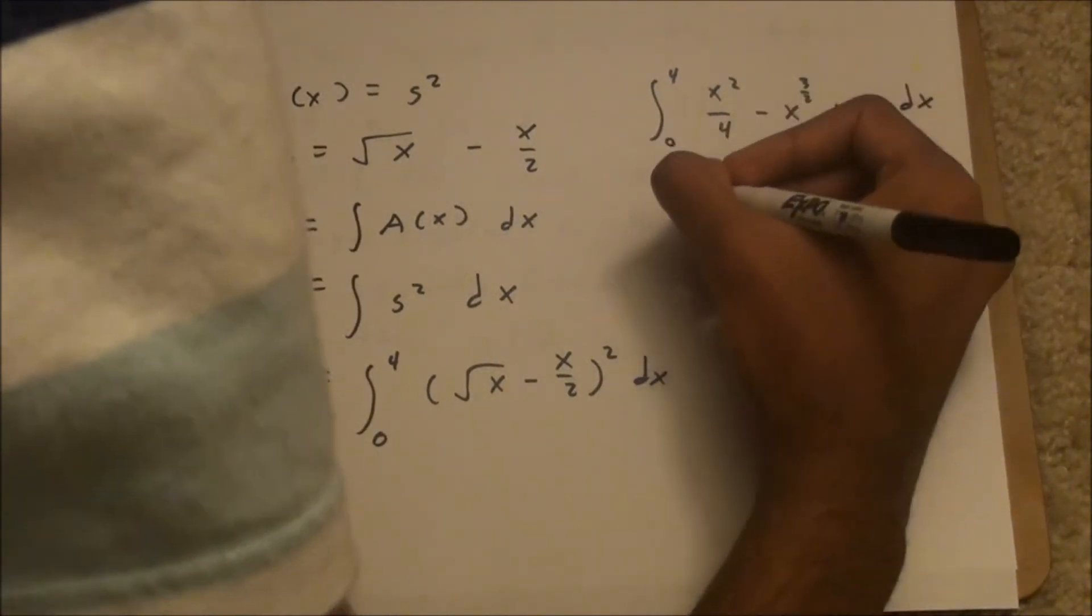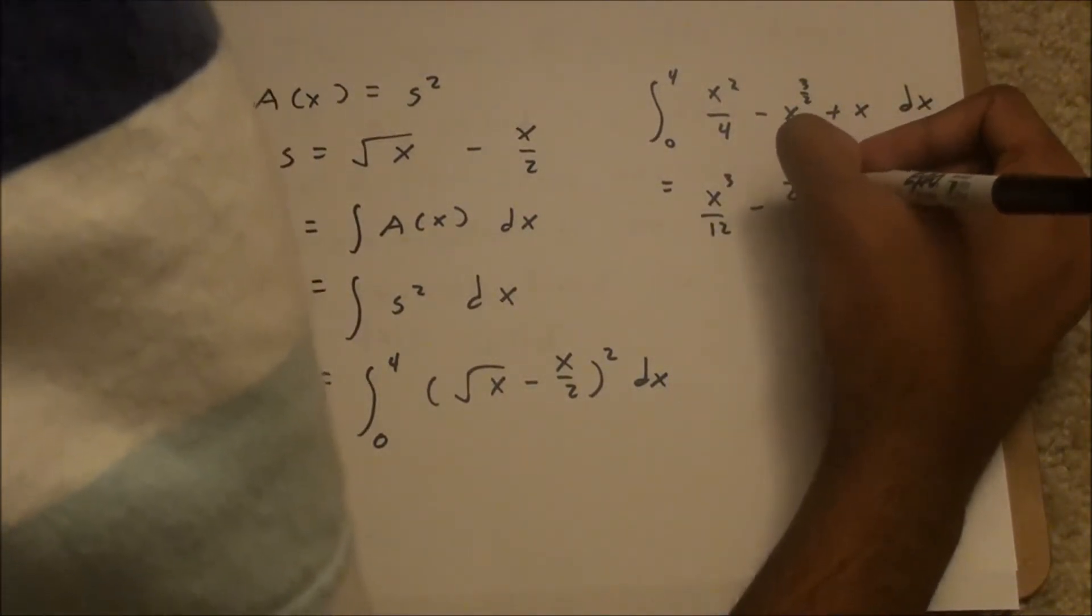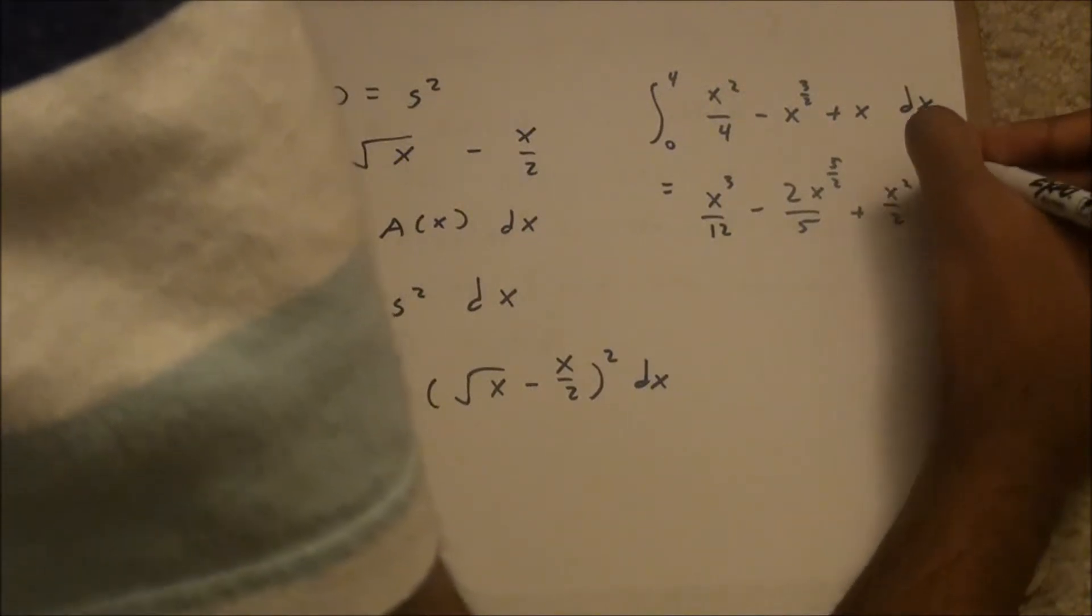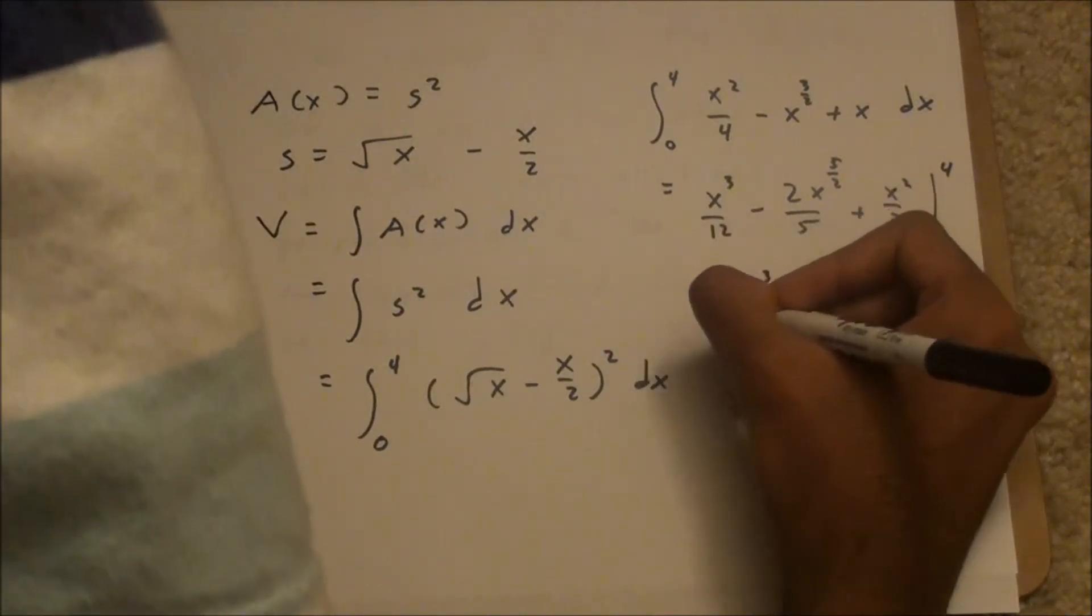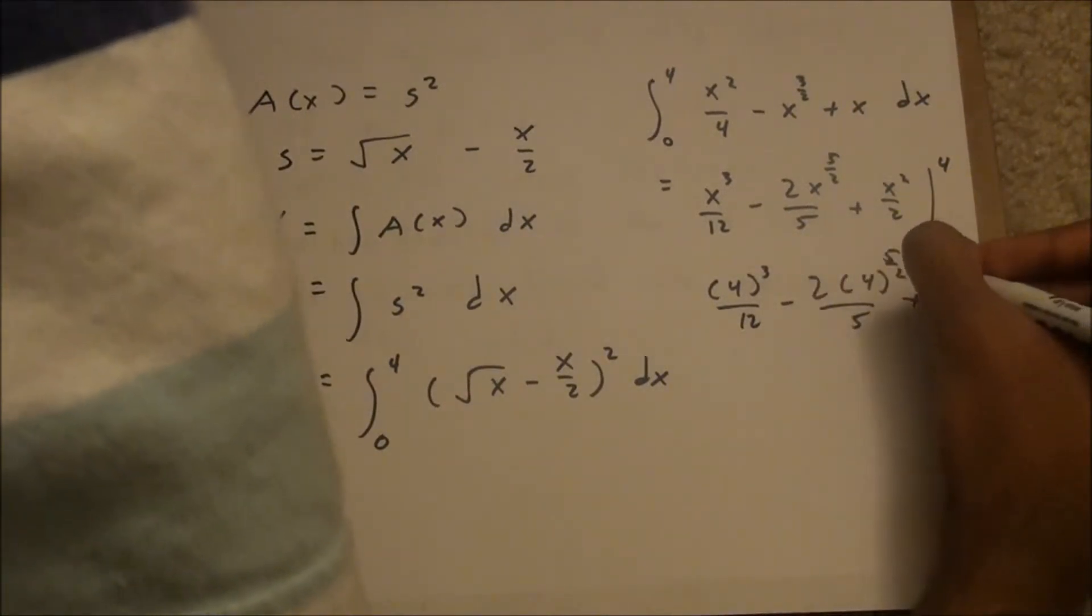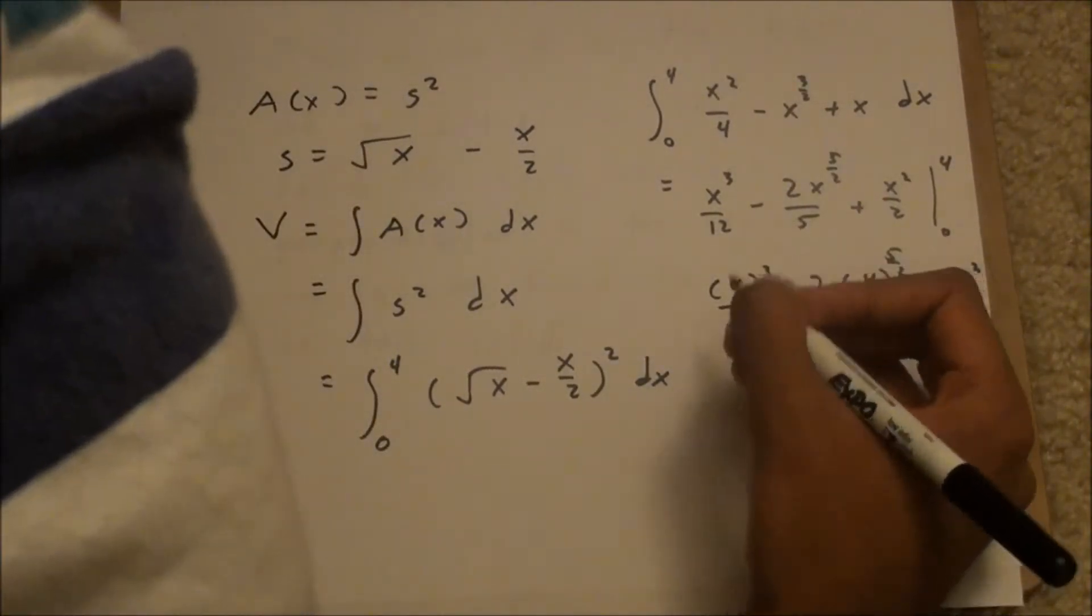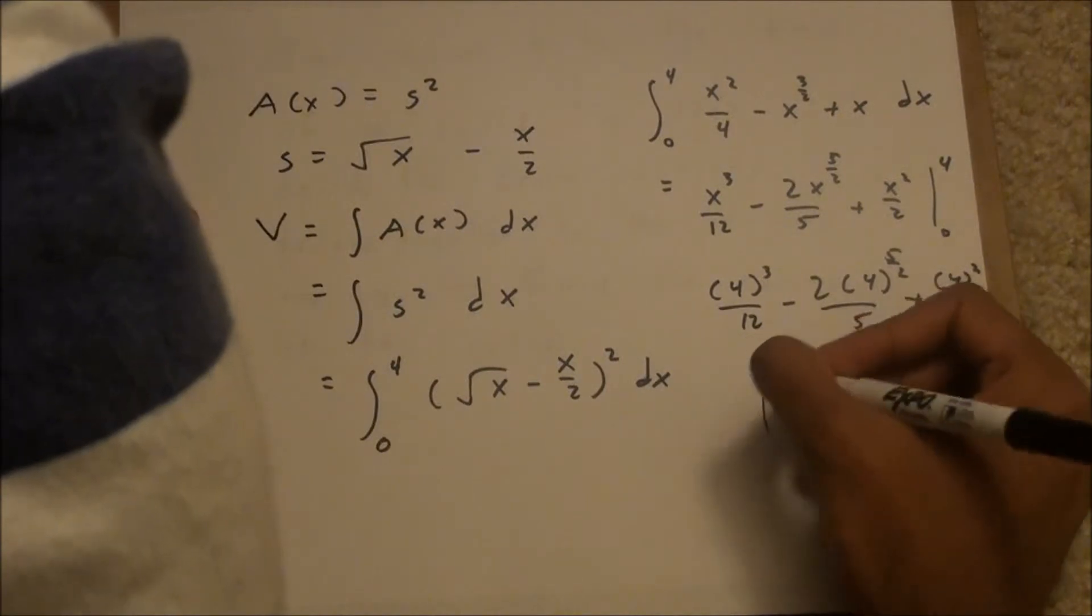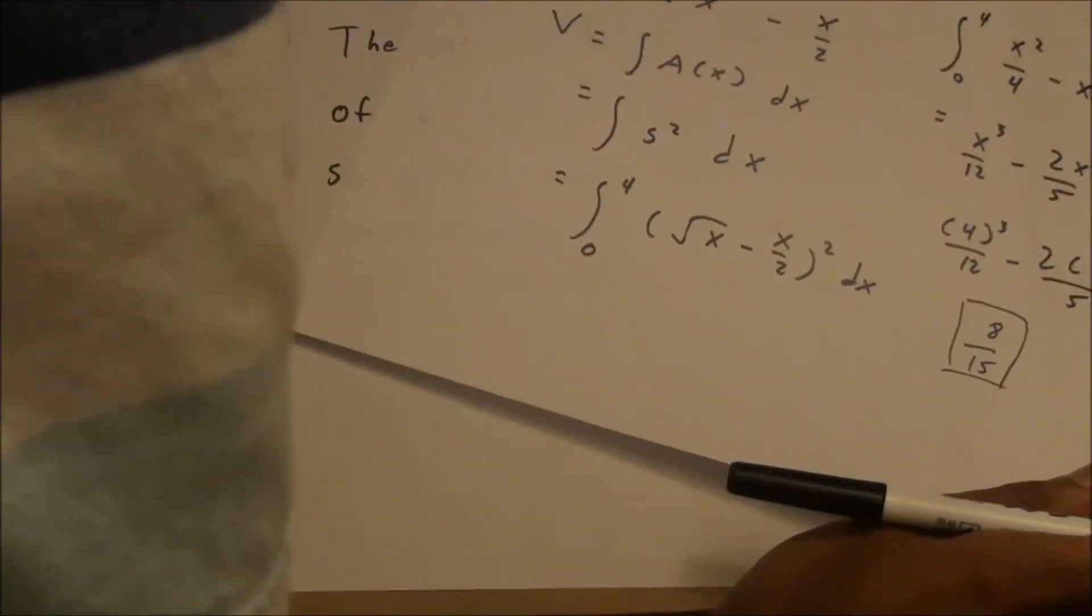And if we do the integral of that, we get x squared over 2 minus 2x to the 5 halves power over 5, plus x to the 3rd over 12, from 0 to 4. And put in 0, it's just 0. And I won't draw all the math here, but eventually you should get 8 over 15 as your final answer. And that would be the volume of that solid.